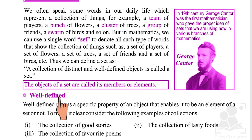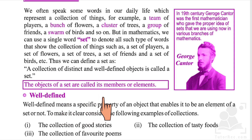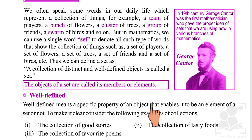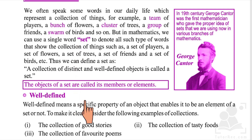Now, characteristics of sets: the first one is that a set must be well-defined. Well-defined means a specific property of an object that enables it to be an element of the set or not. To make it clear, consider the following example: the set of birds — those birds are clearly defined because all birds belong to one category. If we add some animals into that set of birds, then the collection would not be clearly defined, so we would not call it a set. A set must be well-defined and clear.